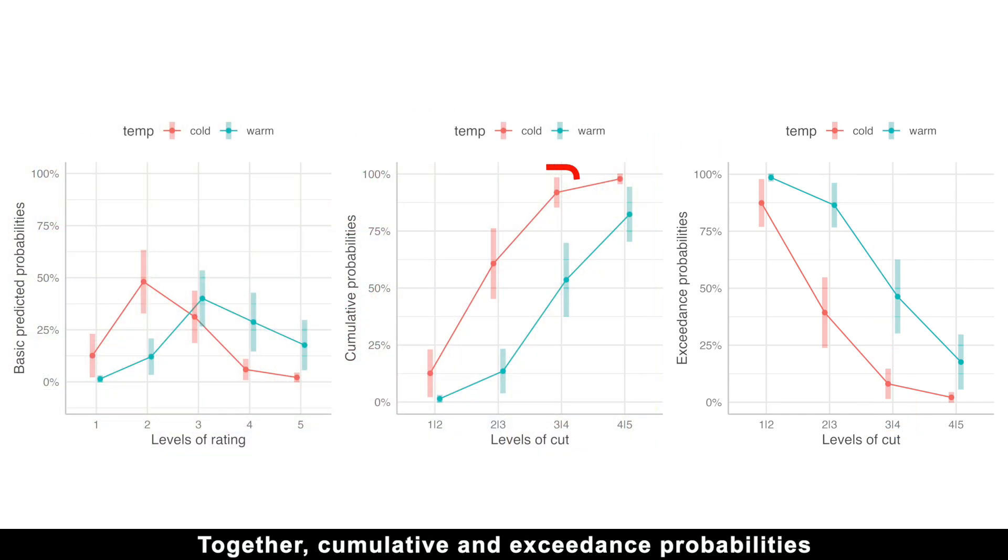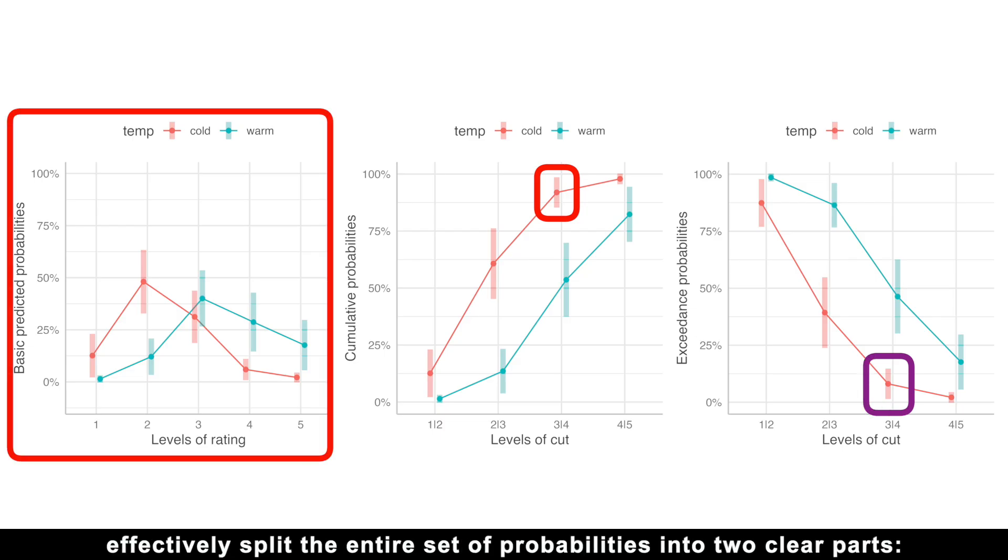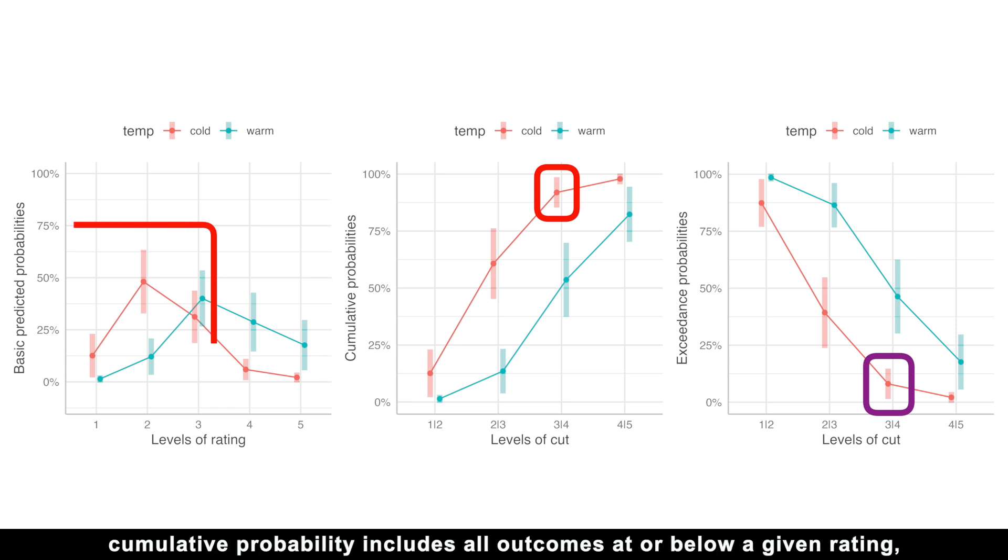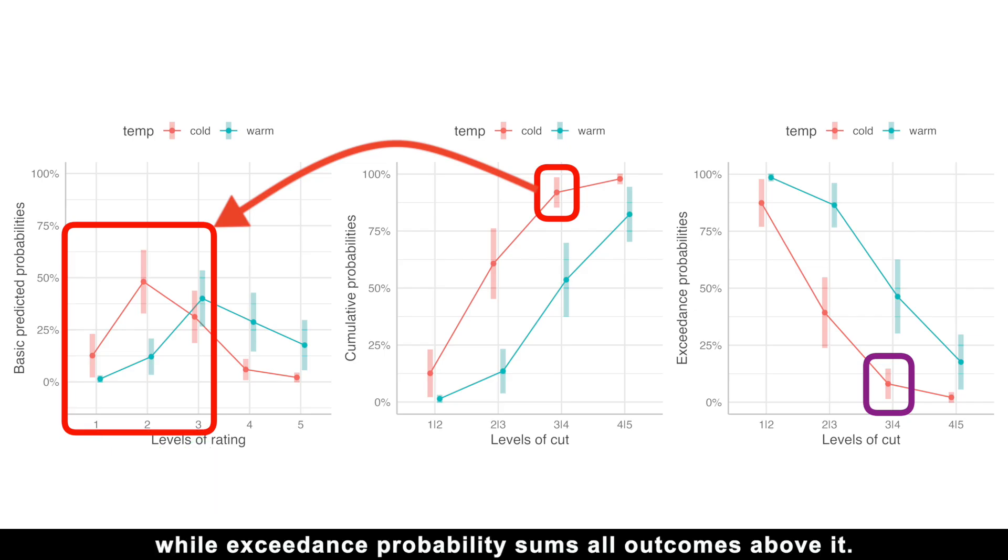Together, cumulative and exceedance probabilities effectively split the entire set of probabilities into two clear parts. Cumulative probability includes all outcomes at or below a given rating, while exceedance probability sums all outcomes above it.